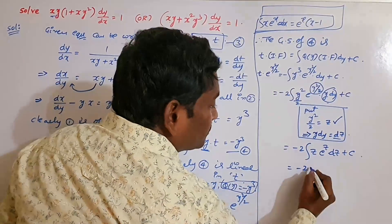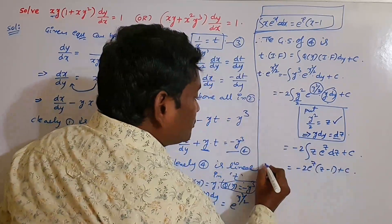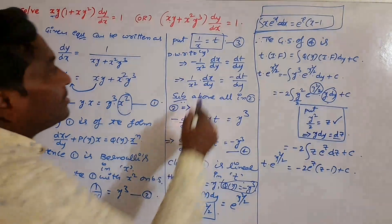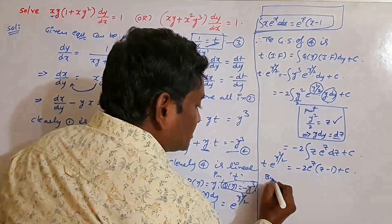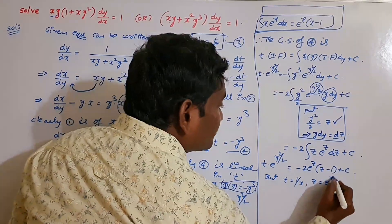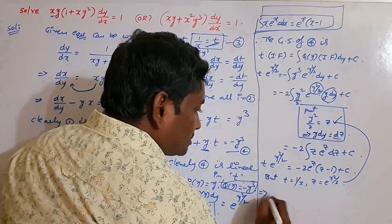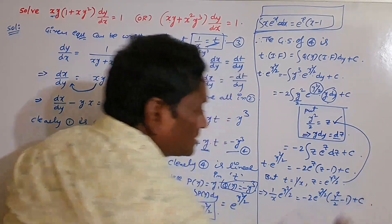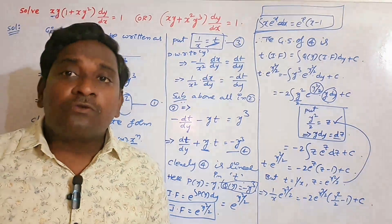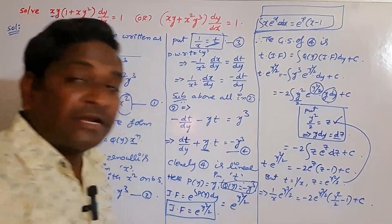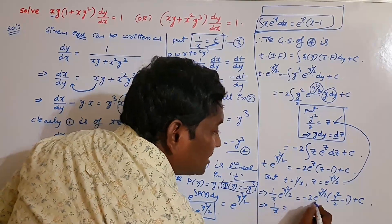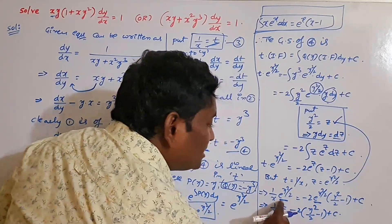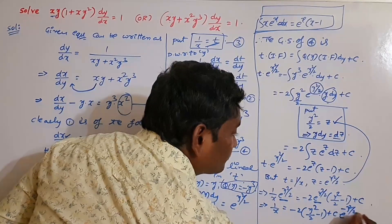The left side is t into e to the power y squared by 2. Now substituting back: t equals 1 by x, and z equals y squared by 2. So 1 by x into e to the power y squared by 2 equals minus 2 times e to the power y squared by 2, times (y squared by 2 minus 1), plus c. Dividing both sides by e to the power y squared by 2, we get 1 by x equals minus 2 times (y squared by 2 minus 1) plus c times e to the power negative y squared by 2.